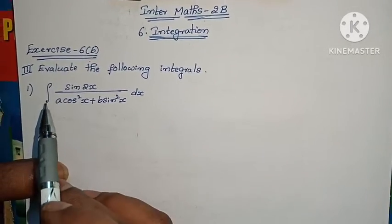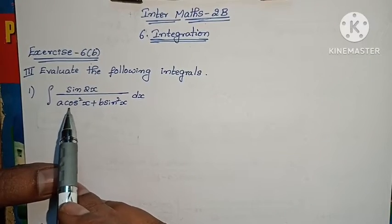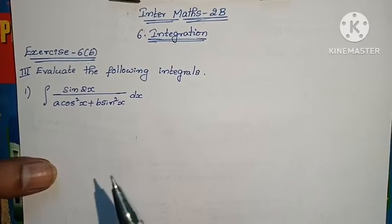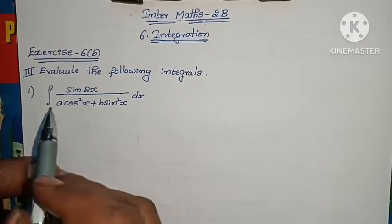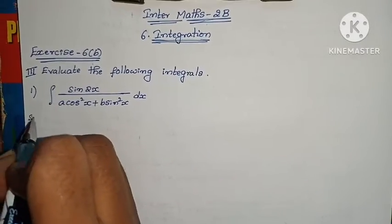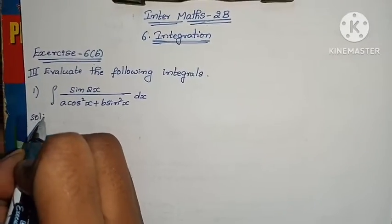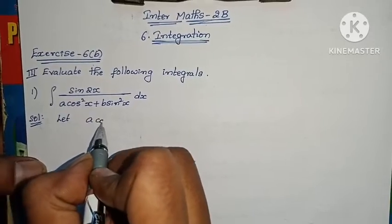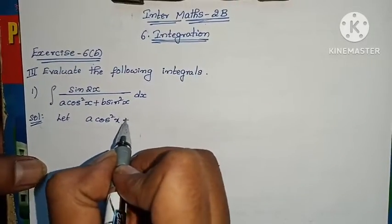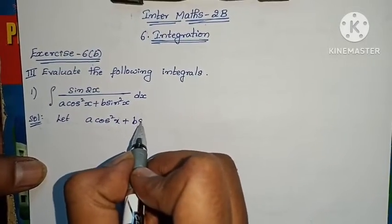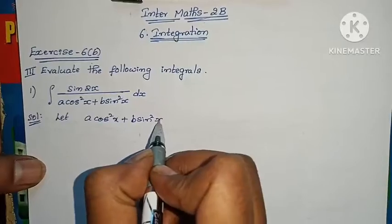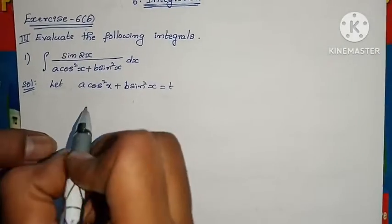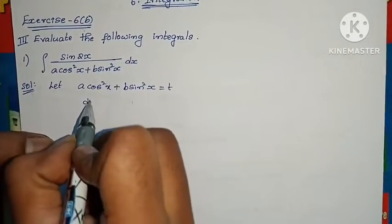The first one: integral of sin 2x by (a·cos²x + b·sin²x) dx. Let's solve it. Let the entire denominator be t — that is, let a·cos²x + b·sin²x = t. Now differentiating on both sides.